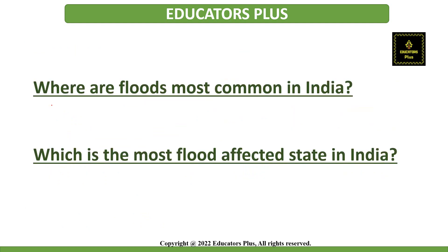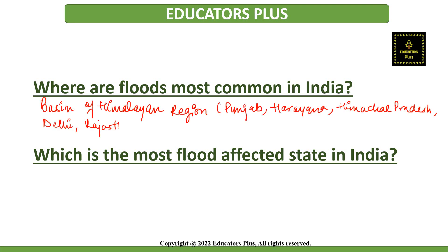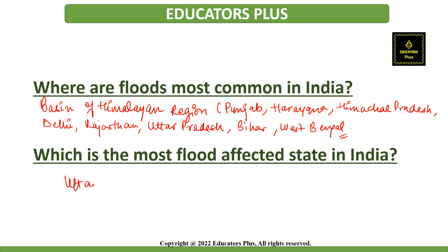Where are floods most common in India? The most flood-prone region of India is the basin of the Himalayan rivers, covering parts of Punjab, Haryana, Himachal Pradesh, Delhi, Rajasthan, Uttar Pradesh, Bihar, and West Bengal. Uttar Pradesh is the most flood-affected state in India, where rivers like Sarada, Rapti, Gandak, and Ghagra cause floods in the eastern part of the state.